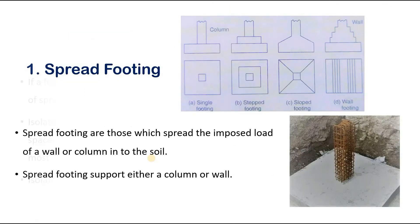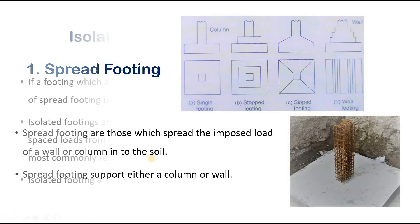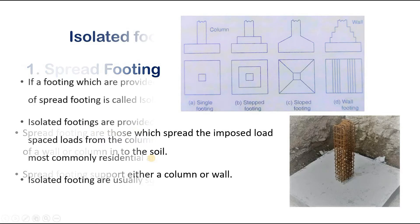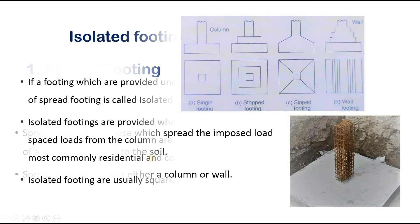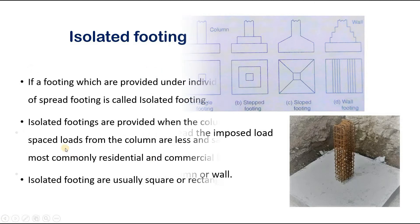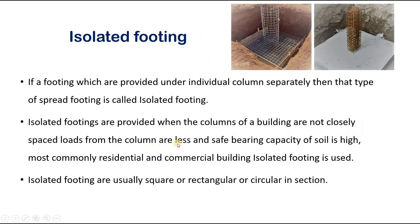In isolated footing, if a footing is provided under individual columns separately, that type of spread footing is called isolated footing. Isolated footings are provided when the columns in a building are not closely spaced, loads from the columns are less, and the safe bearing capacity of soil is high. They are most commonly used in residential and commercial buildings.